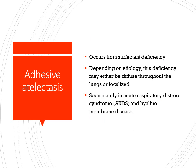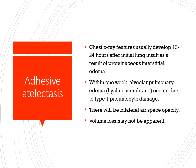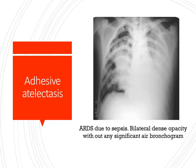Adhesive atelectasis occurs with surfactant deficiency. Depending on the etiology, this deficiency may either be diffuse throughout the lung or localized. It is seen mainly in ARDS and in hyaline membrane disease. Chest X-ray features usually develop 12 to 24 hours after the initial lung insult as a result of proteinaceous interstitial edema. Within one week, alveolar pulmonary edema occurs due to type 1 pneumocyte damage. There will be bilateral airspace opacity and volume loss may not be apparent. This is the case of ARDS where you can see the bilateral diffuse shadowing in the lung.